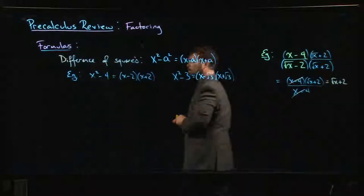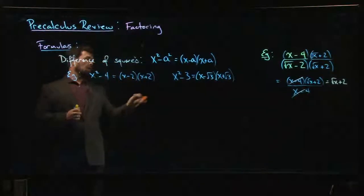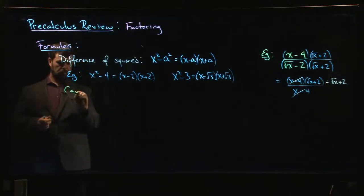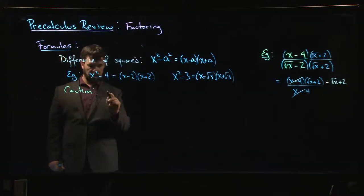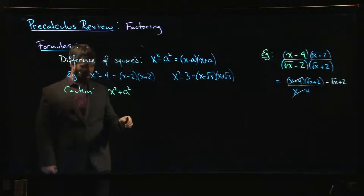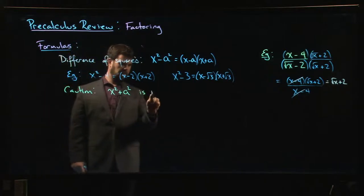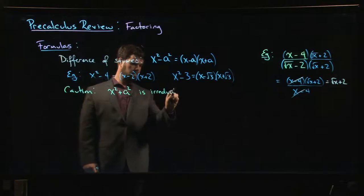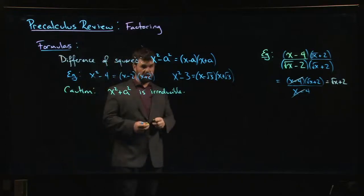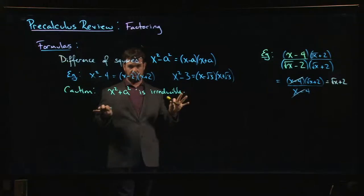Note of caution: a sum of squares is always irreducible. So x squared plus a squared, there's nothing you can do. You can't factor this, it is irreducible. Common mistake that a lot of students will make, one of these ones is sort of born of wishful thinking.